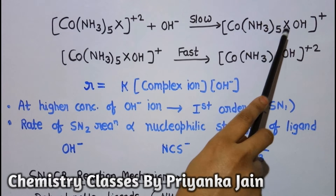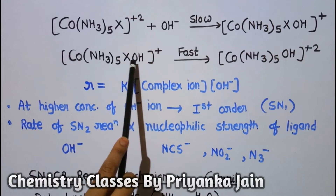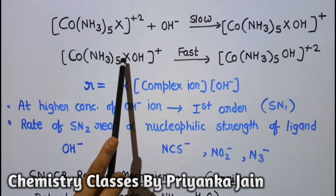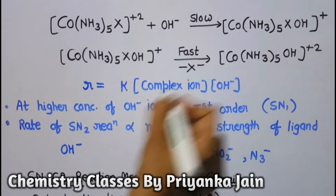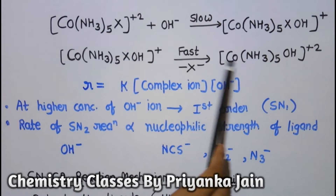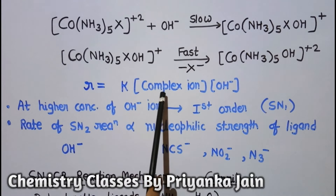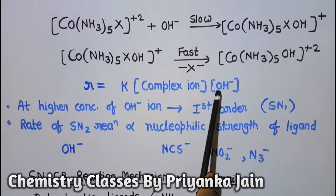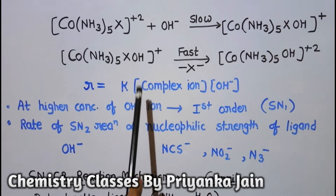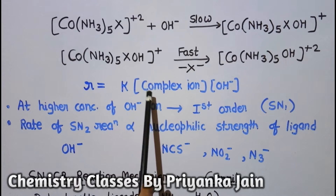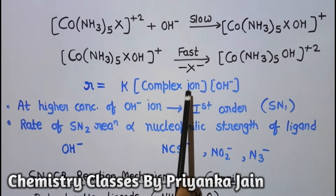In the next step, the activated complex undergoes dissociation — the migrating group X⁻ leaves — giving the product molecule. This next step would be the first step. So if the reaction proceeds by the SN2 mechanism, the rate would depend on both the concentration of the complex ion and the concentration of OH⁻ ions. In actual conditions, at lower concentration of OH⁻ ions, the reaction rate does depend on its concentration, making it second order.